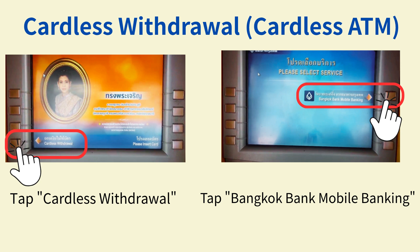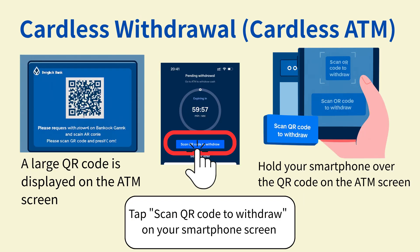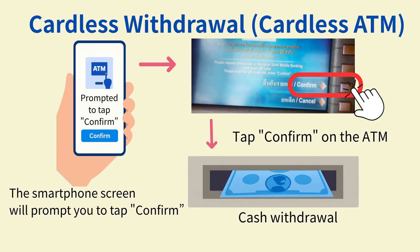On the ATM's first screen, select Cardless Withdrawal at the bottom left. Next, tap Bangkok Bank Mobile Banking. A large QR code will appear on the ATM screen. In your smartphone app, tap Scan QR Code to withdraw, then use that screen to scan the ATM's QR code. Your smartphone screen will prompt you to tap Confirm. Press Confirm on the ATM screen and the cash will be dispensed. Be sure to take it.